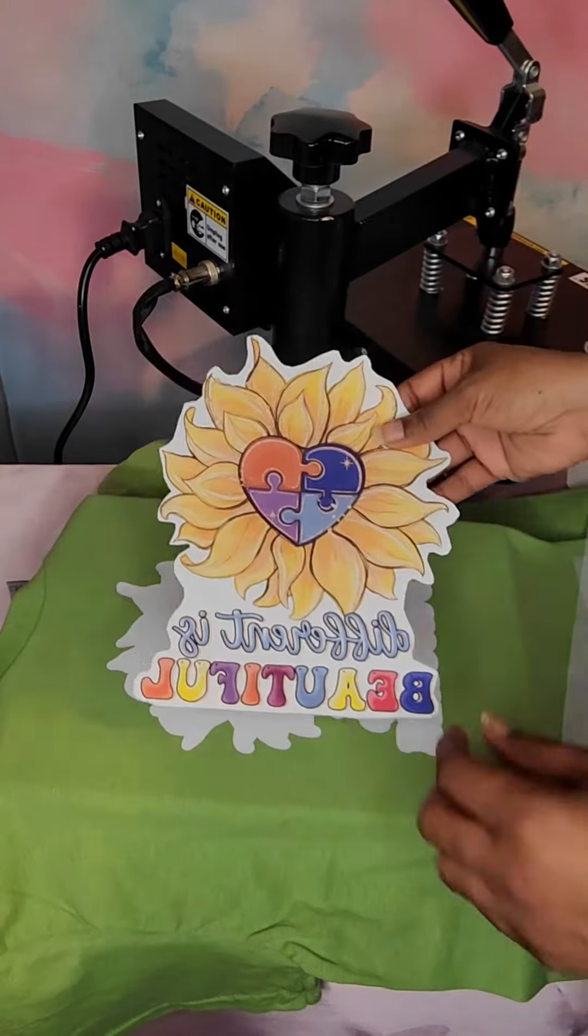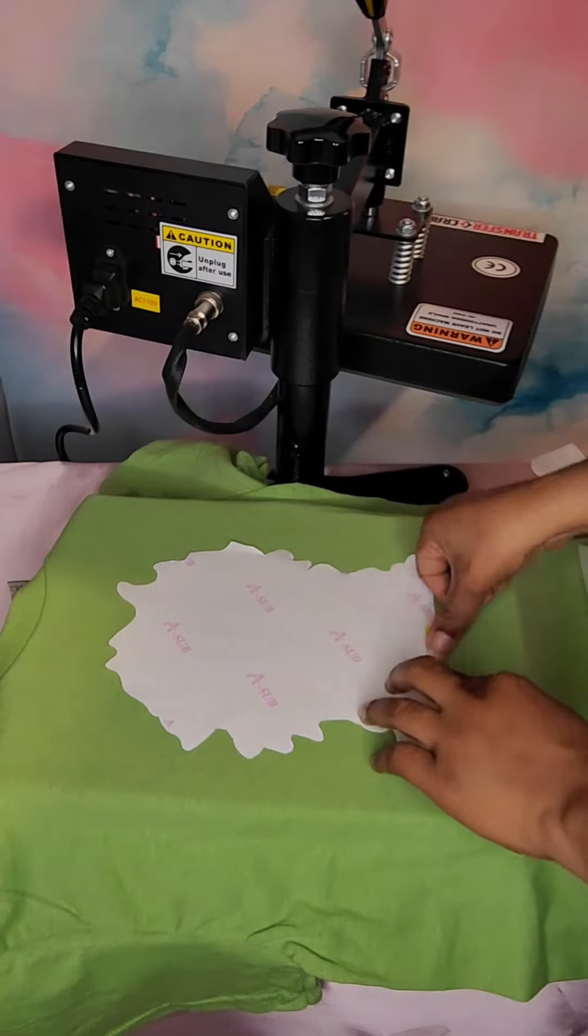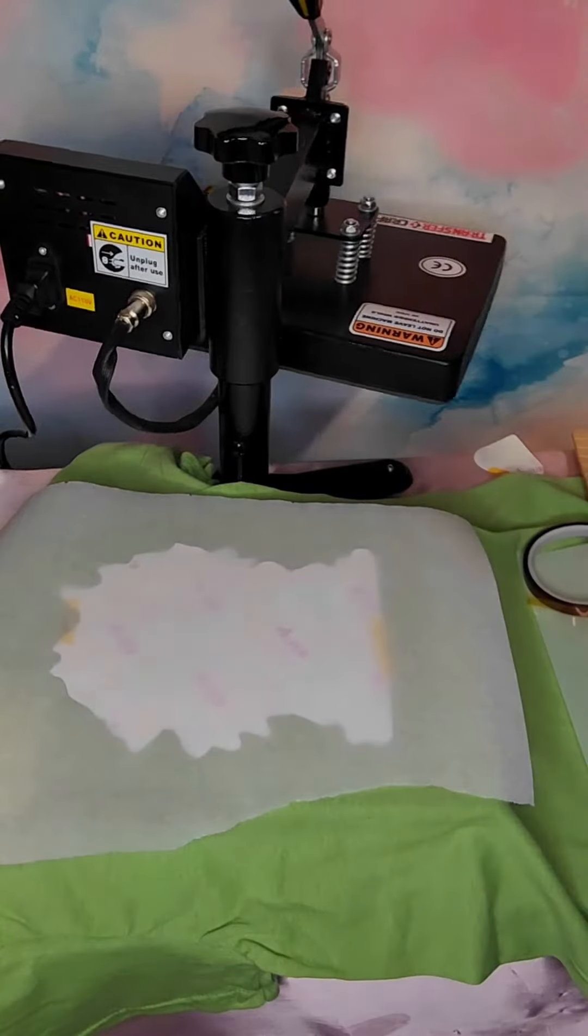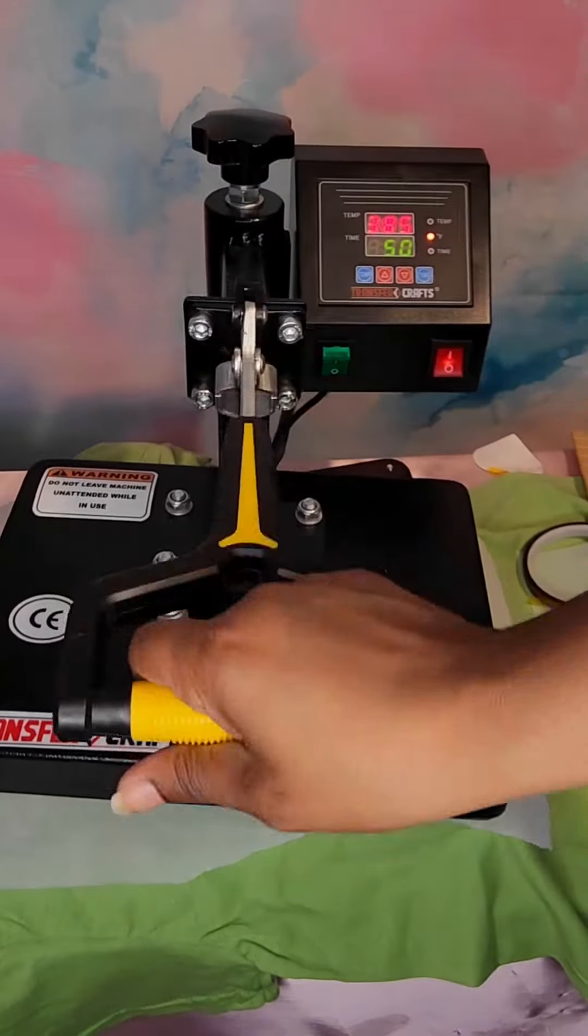Lay your sub image down and make sure to mirror. Press at 385 degrees for 60 seconds.